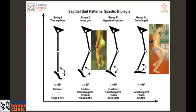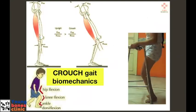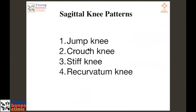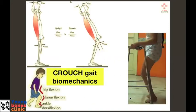Jump gait kids do well because they need fewer surgeries. Crouch gait results in three knee patterns: jump knee, crouch knee, stiff knee, and recurvatum knee. Stiff and recurvatum knees have a very tight rectus femoris. In the swing phase, we see less knee flexion — a stiff knee gait. If we assess the child in the sagittal plane, there is inadequate knee flexion in swing. These kids may need a rectus release or rectus transfer. This is why different gait patterns are so important — to decide where to apply botox, where to stretch, and how to position the kids.